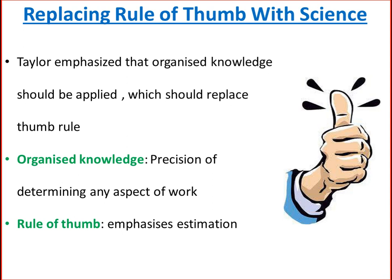The first principle of scientific management is replacing rule of thumb with science. Taylor emphasized that organized knowledge should be applied, replacing rule of thumb. The use of scientific method denotes precision in determining any aspect of work, while rule of thumb emphasizes estimation. Since exactness of various aspects such as a fair day's work, standardization in work, and differential piece rate of payment is the basic core of scientific management, all these must be measured precisely and not based on estimates.